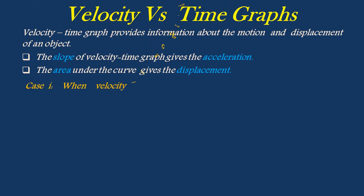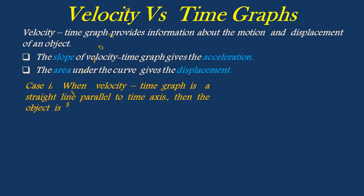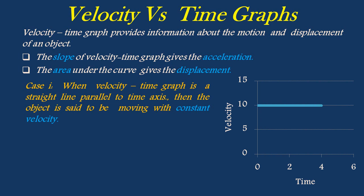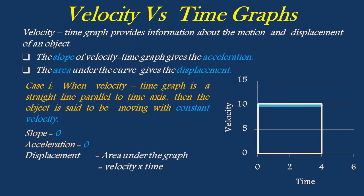When the velocity-time graph is a straight line parallel to the time axis, then the object is said to be moving with constant velocity. The following graph is obtained when the object is moving with uniform velocity of 10 meter per second. As the velocity is constant, the slope of the graph is zero, so acceleration is also zero. Displacement is obtained from the area under the graph. Here the graph is in the shape of a rectangle, so area = length × breadth = velocity × time = 10 × 4 = 40 meters.